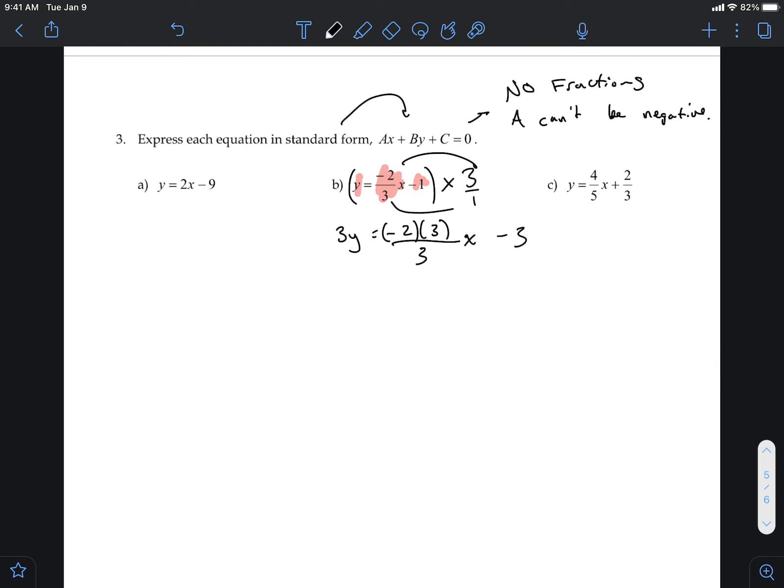So you don't need to show this step. The whole point of multiplying by three was so that these two threes divided out to be one. That was the whole point. So you don't have to show this step. You don't have to write it like that. You could just jump right to here.